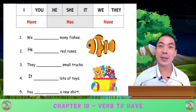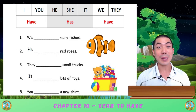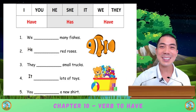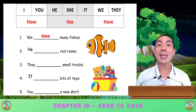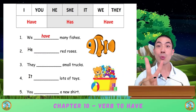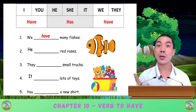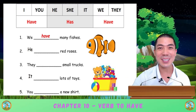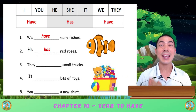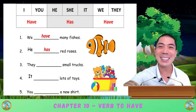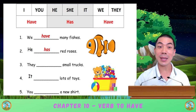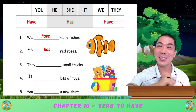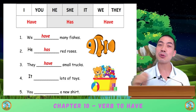Let's do the first three questions together. Question one: is it 'we have' or 'we has'? Good — this one is 'We have many fishes.' What about question two? 'He blank red roses.' Is it 'he has' or 'he have'? Good — this one is 'He has red roses.' And what about question three? 'They blank small trucks.' Is it 'they have' or 'they has'? Good — they have small trucks.